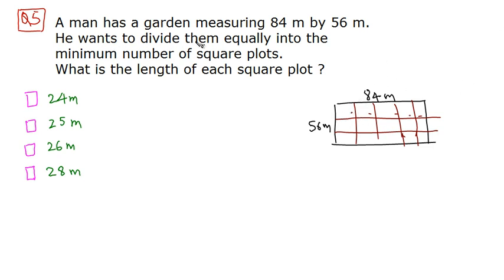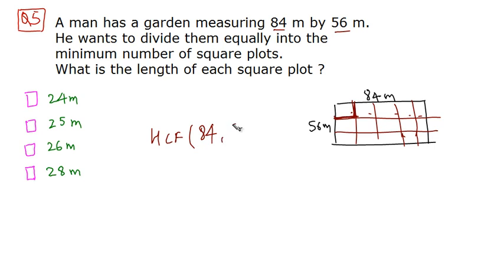He wants the minimum number of square plots, which means the length of each square plot should be maximum. For the length to be maximum, it must divide both the length and the width of the garden exactly. Therefore, the side length of each square plot should be the highest common factor of 84 and 56.